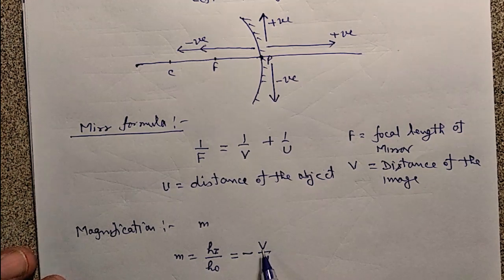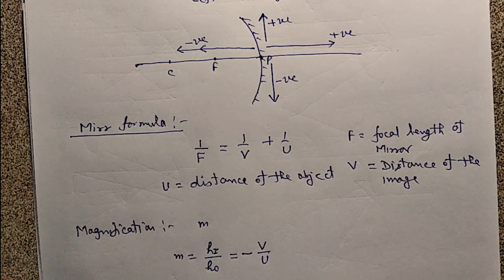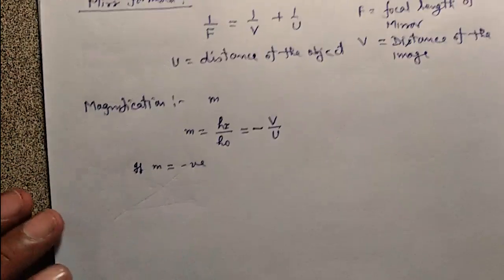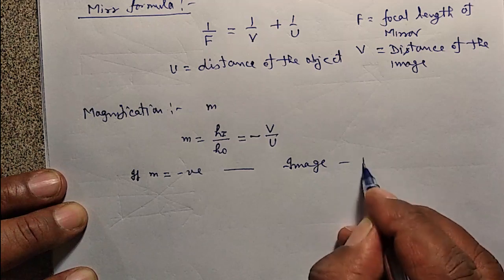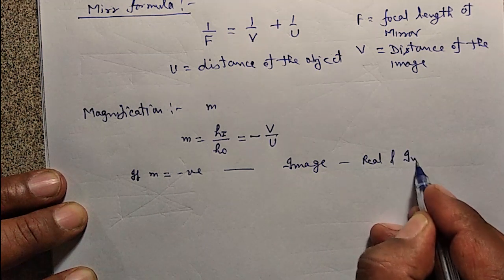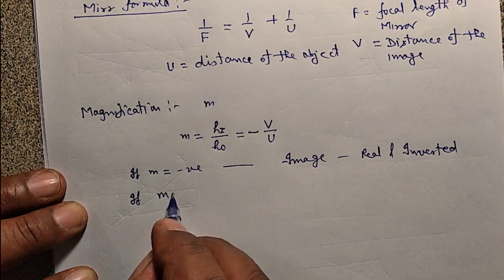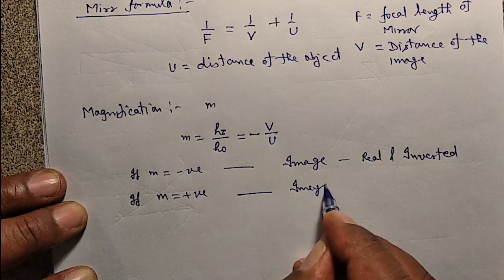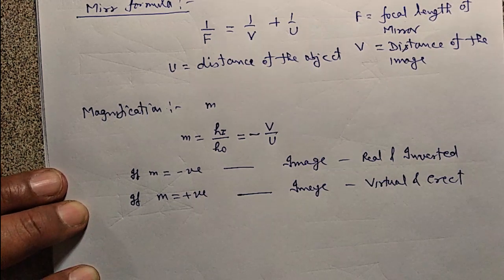V is the distance of the image and U is the distance of the object. If M is negative, the image is real and inverted. If M is positive, the image is virtual and direct.